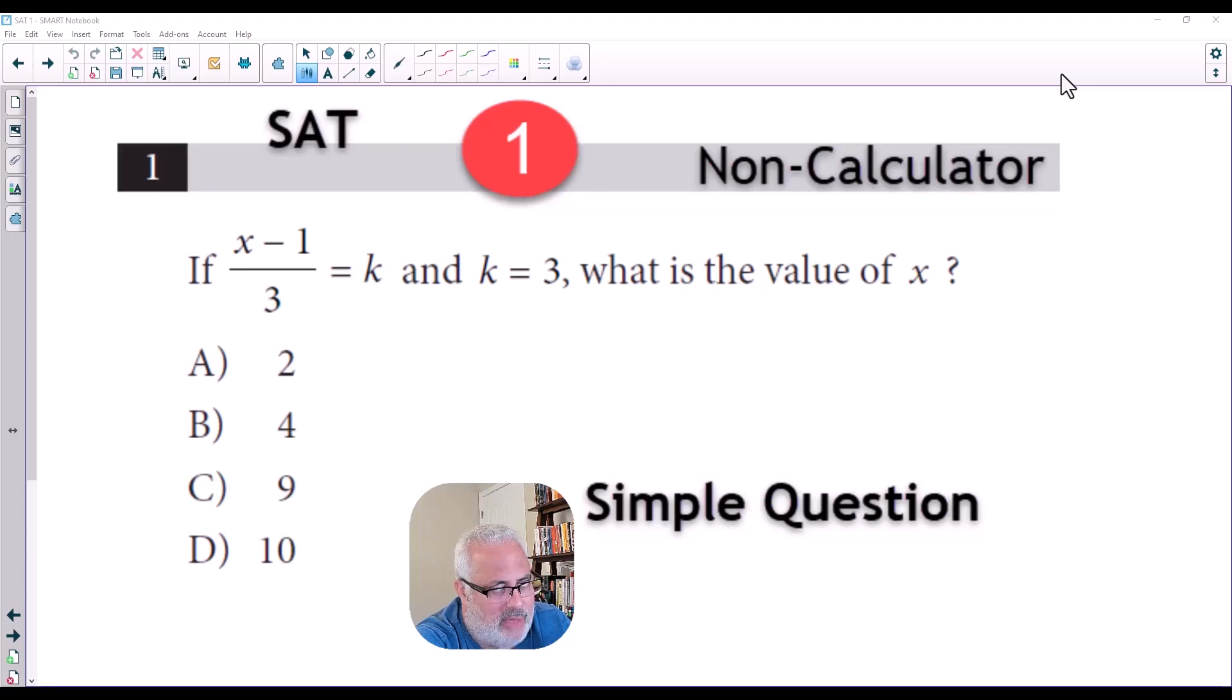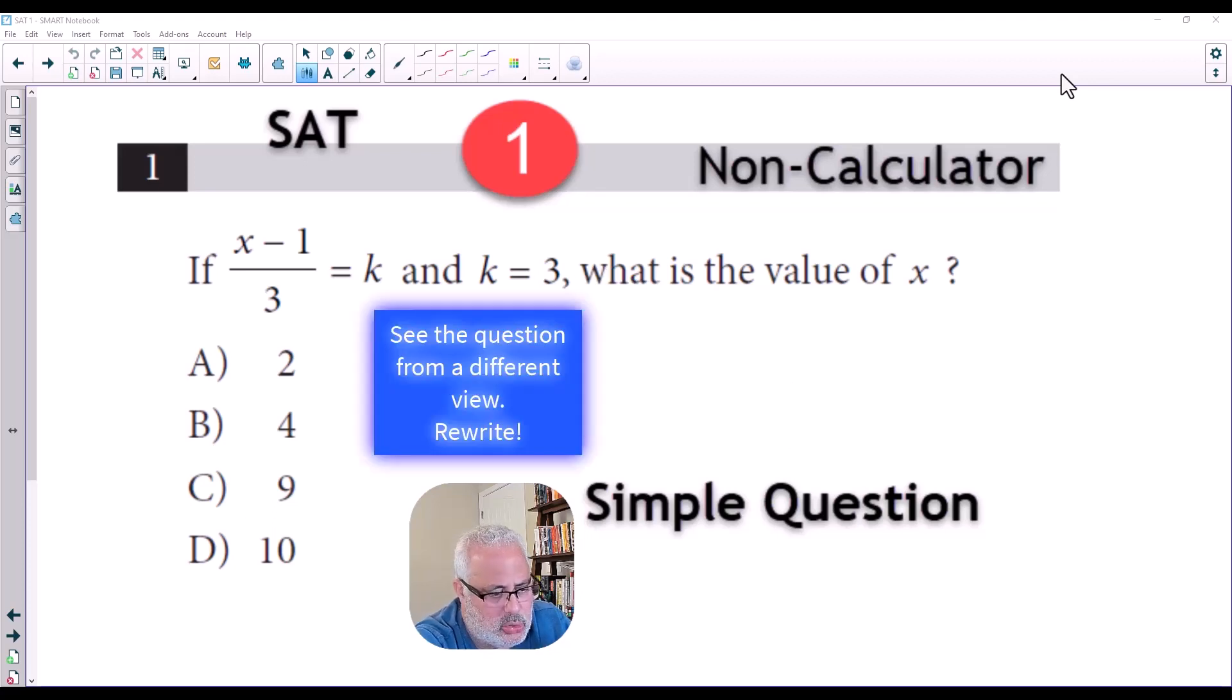But really you don't have two unknowns. You only have one unknown, which is X, because K is given. But this happens in seconds or fractions of a second. So first test-taking strategy is try to see the question from a different view.